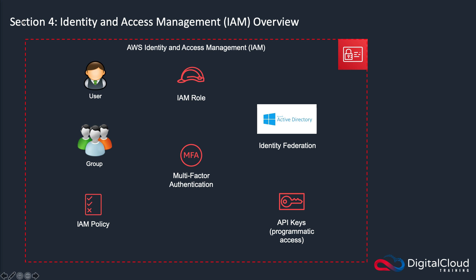What you have on your screen here are a few of the components of IAM. We can create user accounts. We can create groups and put users into those groups. We can create policy documents which describe what permissions we have, and we assign those policy documents to users, to groups, and to roles. The roles themselves are essentially security principles that can be used by services within AWS, and we'll see how those work later on. We also have multi-factor authentication, which is a way of adding an additional layer of security when you log in.